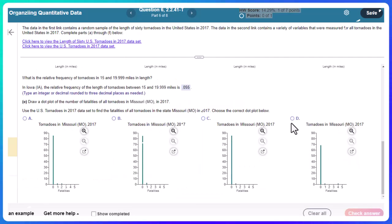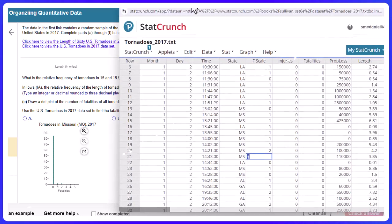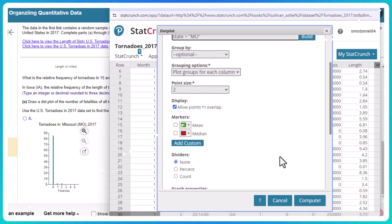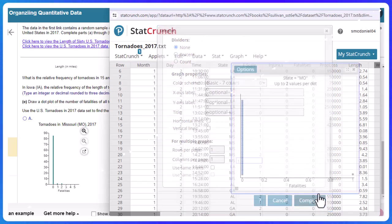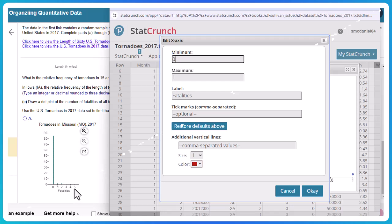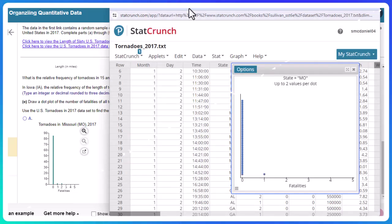Draw dot plot of the number of fatalities of all tornadoes in Missouri in 2017. So again, we're going to go back to the same data set, the second one here. Pull this up. Dot plot. Fatalities. State equals again, MO. We'll leave everything here the same and press compute. There we go. Now notice that their X axis goes out to five. So I'm going to make that five. And I don't think we need to change the Y. So let's take a look.